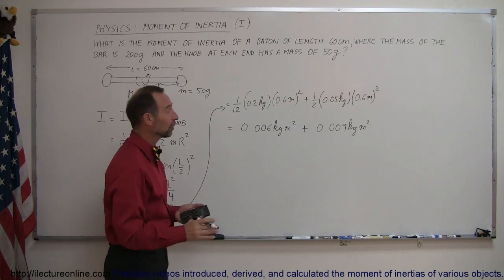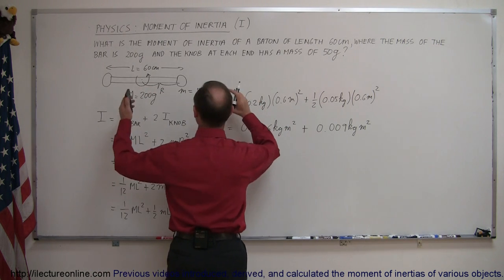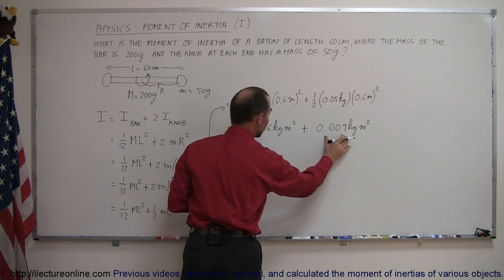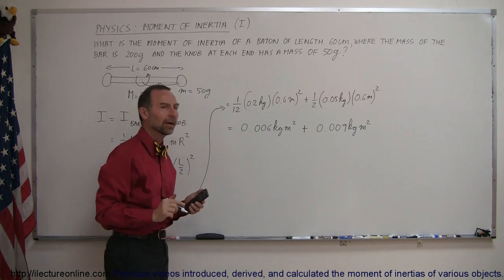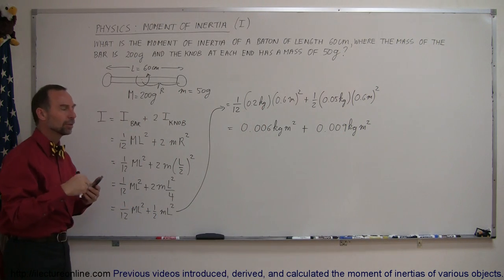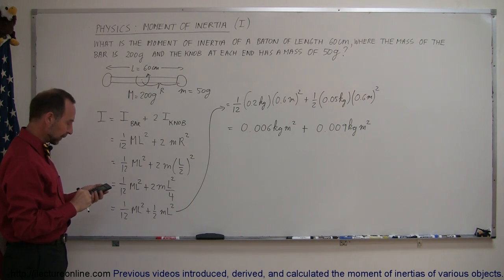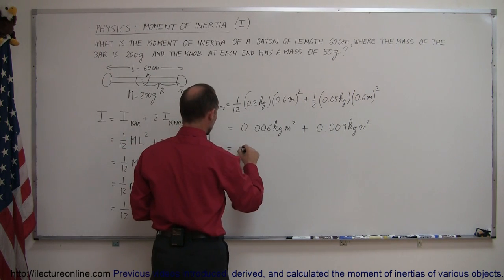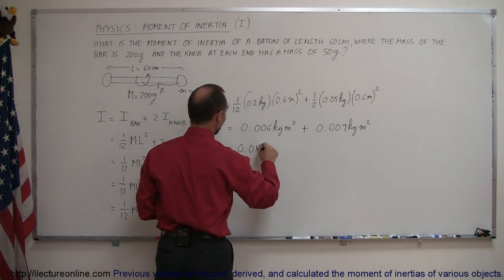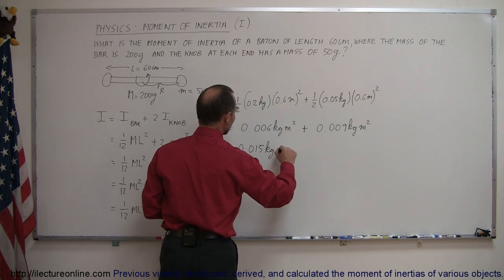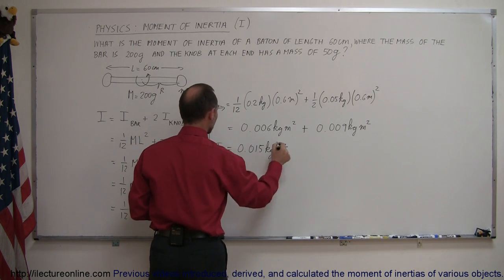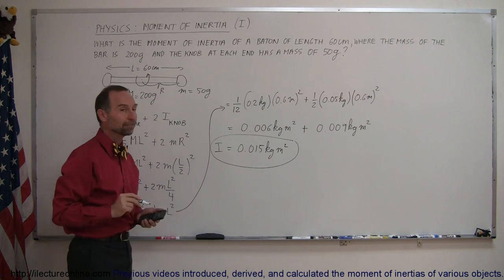Notice that the moment of inertia of the two knobs at the end, even though they're much lighter in mass, is actually larger than the moment of inertia of the bar. And that helps stabilize the motion of the bar. So that's actually done intentionally to make it easier to twirl it around and to make it more stable. Then we add those two together and so this would be 0.015 kilogram meter squared, which is the moment of inertia of our baton.